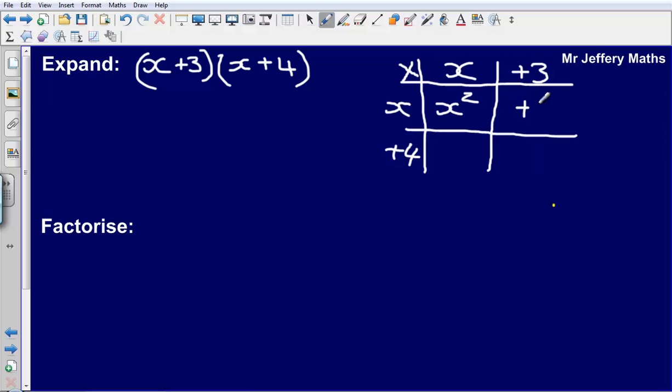So x times x gives me x squared, x times plus 3 gives me plus 3x, x times plus 4 gives me plus 4x, and then plus 3 times plus 4 gives me plus 12.